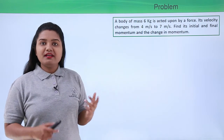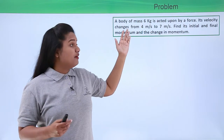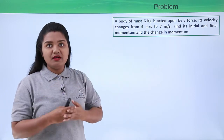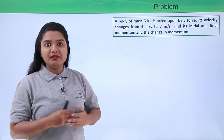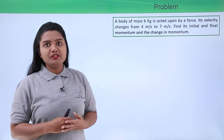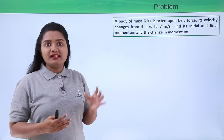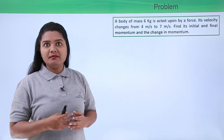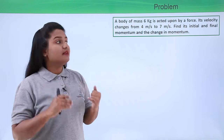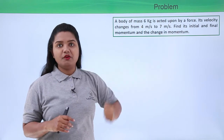A body was acted upon by a force which led to its change in velocity from 4 meters per second to 7 meters per second. We need to find out its initial momentum, final momentum, and the change in momentum of the body.